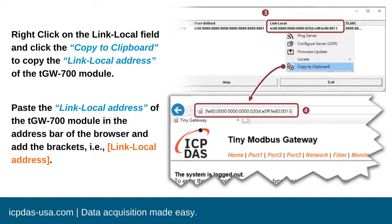Paste the link local address of the TGW-700 module in the address bar of the browser. Be sure to add the brackets.